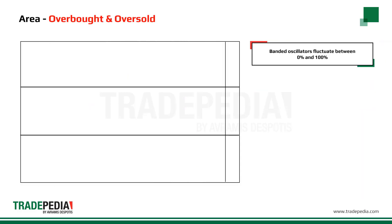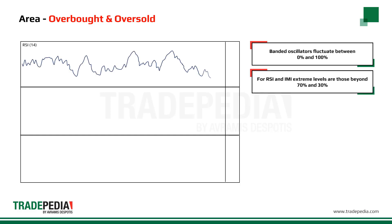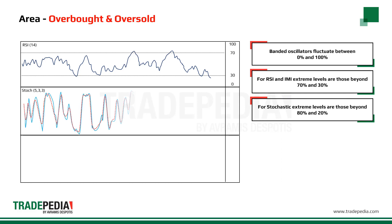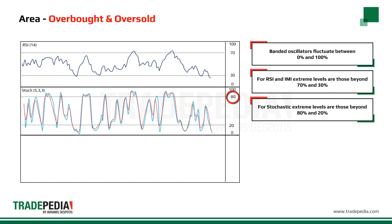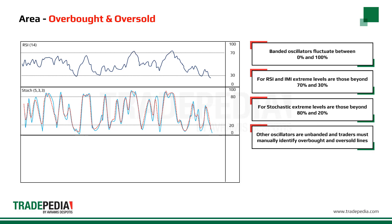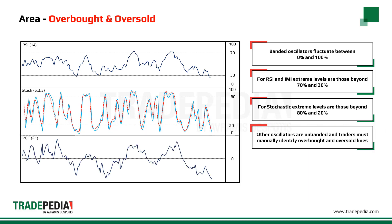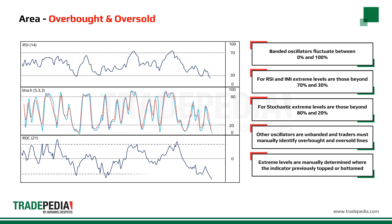Banded oscillators fluctuate between 0% and 100%. For RSI and IMI, extreme levels are those beyond 70% and 30%. For stochastic, extreme levels are those beyond 80% and 20%. Other oscillators like ROC or MACD are unbanded, meaning they have no minimum and maximum values, and traders must manually identify overbought and oversold lines. Extreme levels are manually determined and marked where the indicator shows a cluster of previous tops or bottoms.